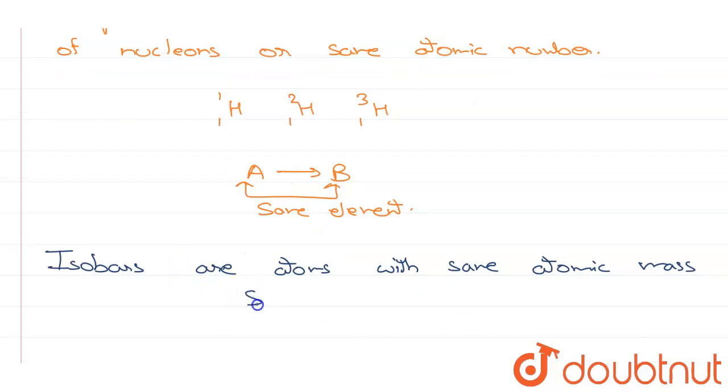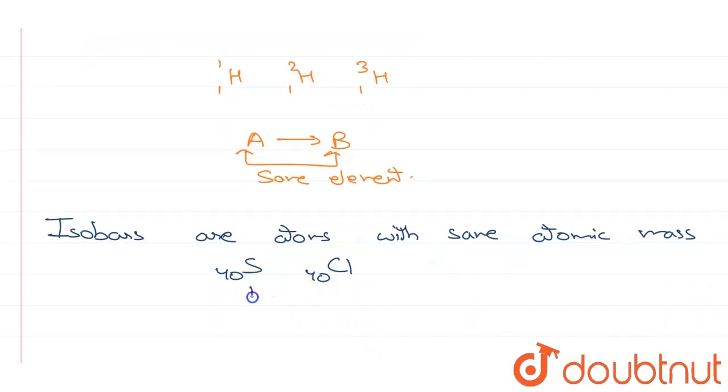For example, S40 and Cl40 are both isobars of each other. They have the same atomic mass.